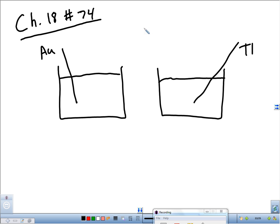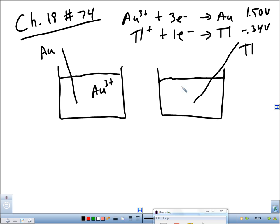If we look at our two things from the book, we have Au³⁺ + 3e⁻ becoming gold metal and we have Tl⁺ + 1e⁻ becoming thallium. This has a potential of 1.5 volts. This has a potential of negative 0.34 volts. What's going to be in the solution here? Au³⁺. How about over here? Tl⁺.